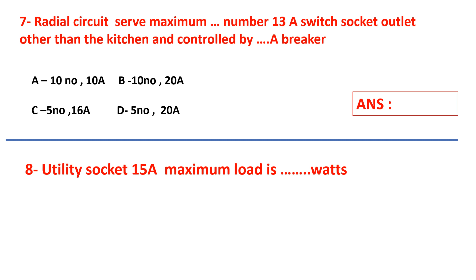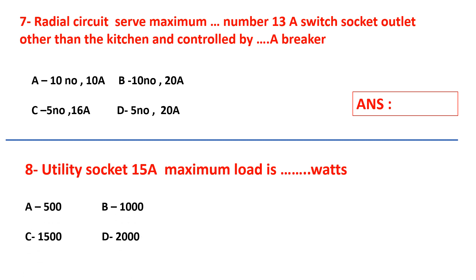Question number eight: utility socket 15-ampere maximum load is dash watts. Your answers are: A) 100, B) 500, C) 1000, D) 1500, E) 2000 watts. Select your answer.